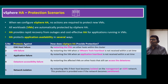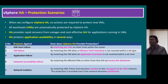How does vSphere HA provide protection across all scenarios? The common solution is restart, but for a few scenarios instead of restart we ask the customer for downtime to power off and then restart. For host failure: by restarting virtual machines on other hosts within the cluster. For VM failure: by restarting the virtual machine when VMware Tools heartbeats are not received within a set time. For application failure: by restarting the VM when application heartbeats are not received within a set time. For data store accessibility failure: by restarting affected VMs on other hosts that can still access the data stores. For network isolation: by restarting VMs if their host becomes isolated on the management or virtual SAN network — this protection is provided even if the network becomes partitioned or separated.